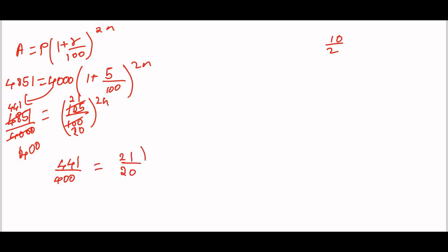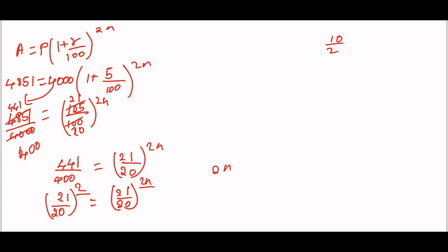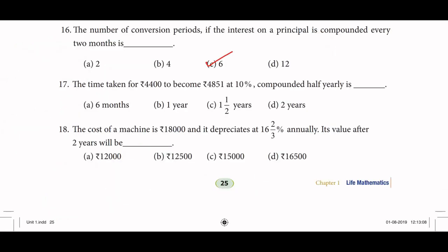So 21 divided by 20 the whole power of 2N. That equals 21 by 20 the whole power of 2, which is 2 squared. So 2N equals 2, and N equals 1. So the number of years is equal to 1 year.